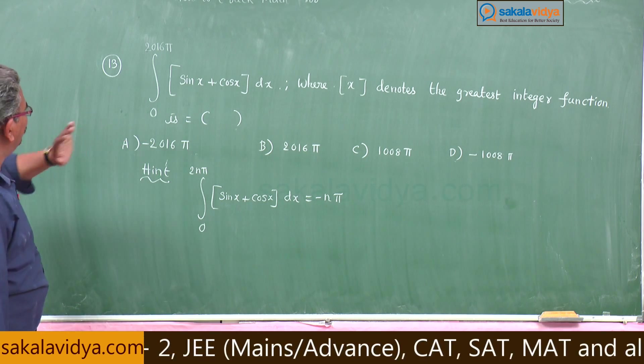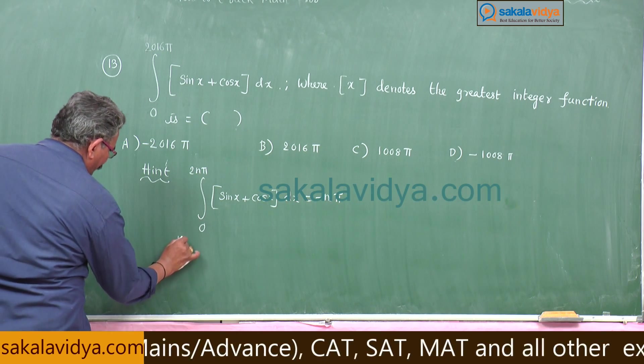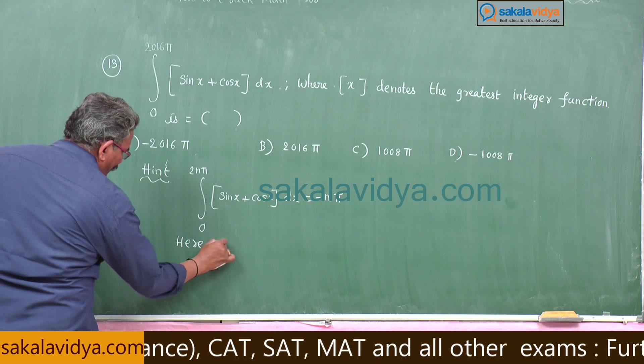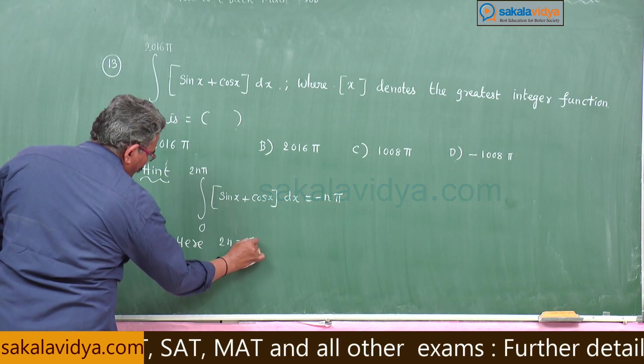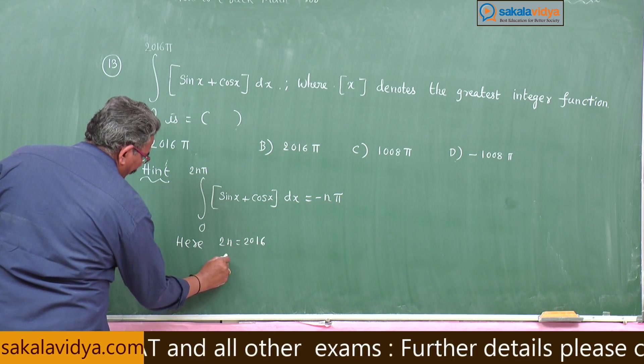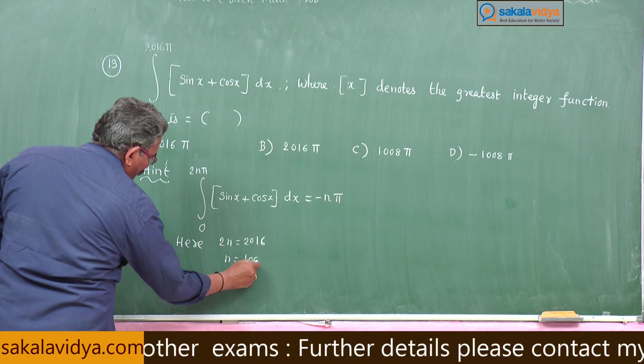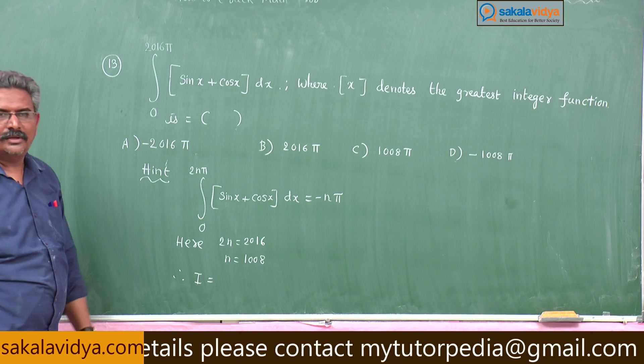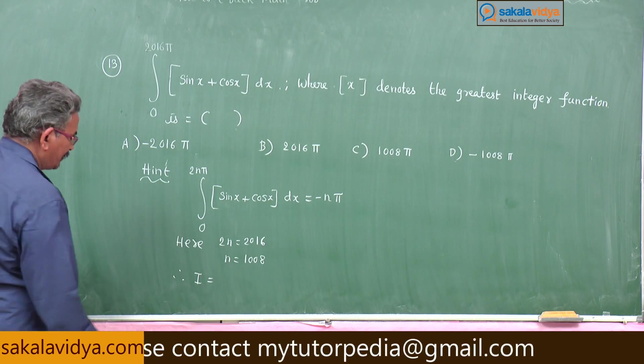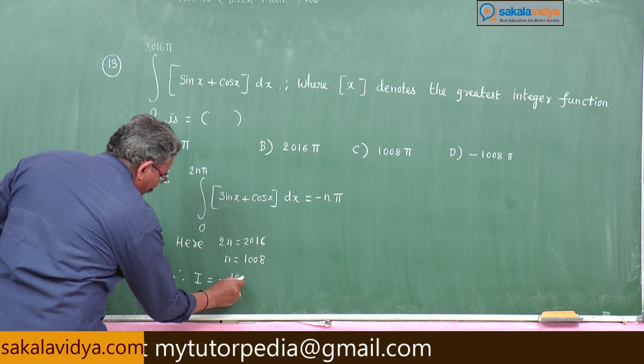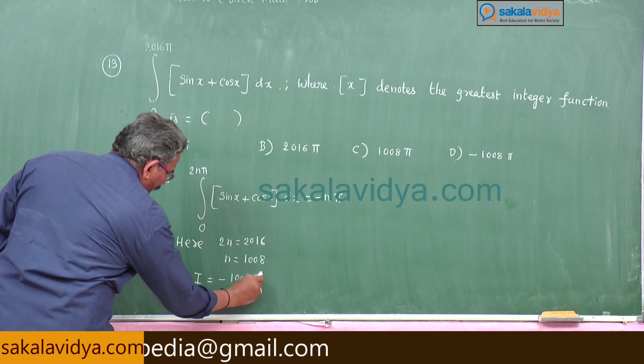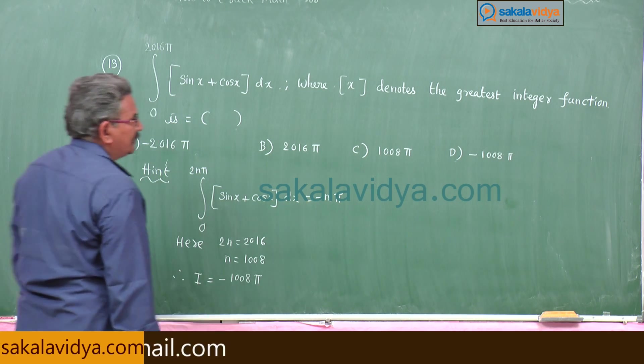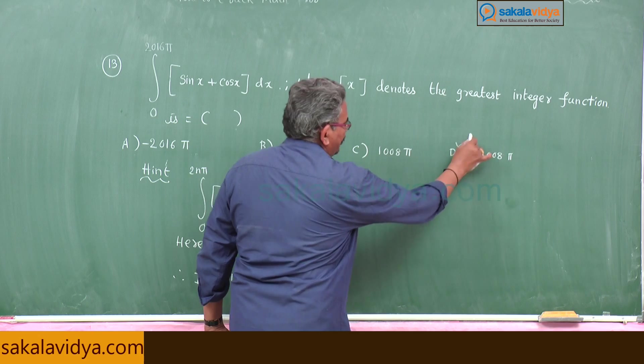Here we have to find n value. Here 2n = 2016, n = 1008. Therefore, required integral I is equal to -nπ = -1008π, which is the right option. Yes, d is the right option.